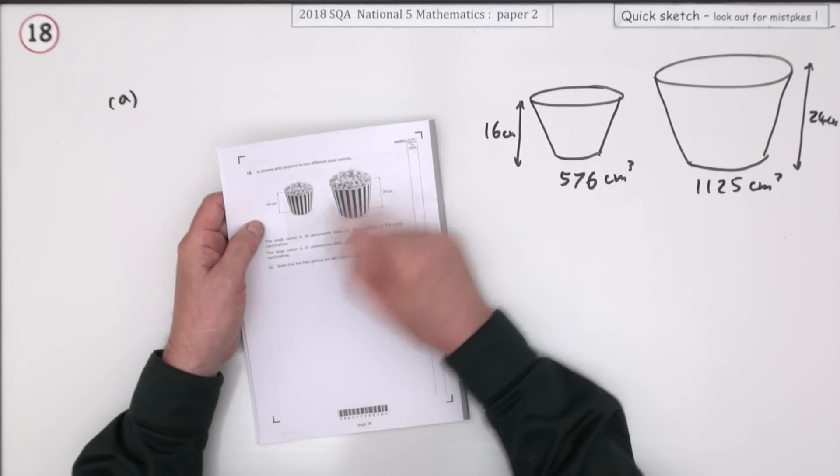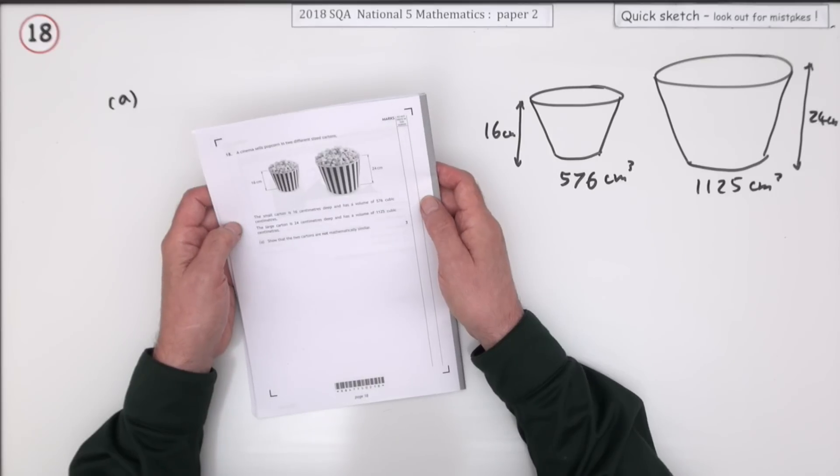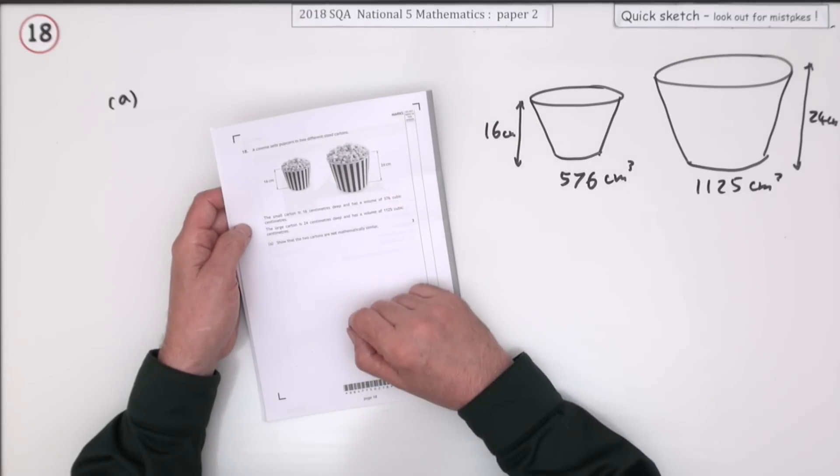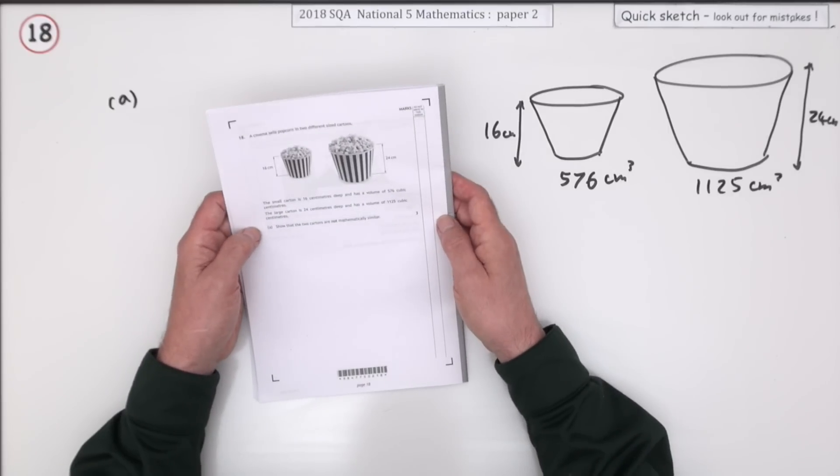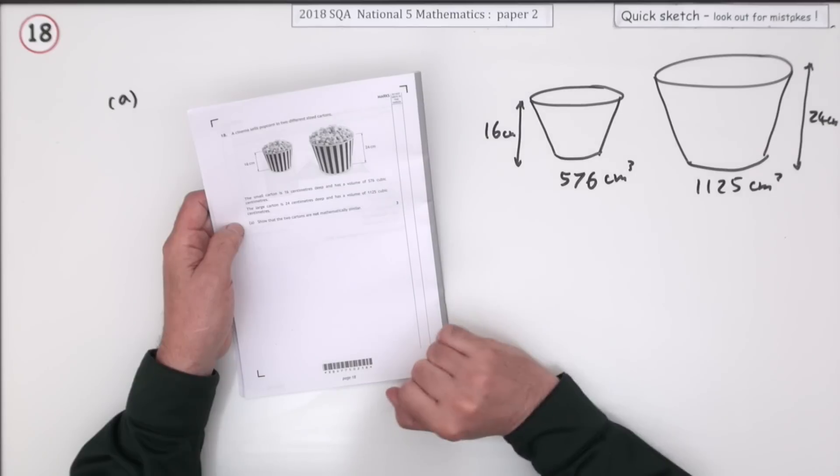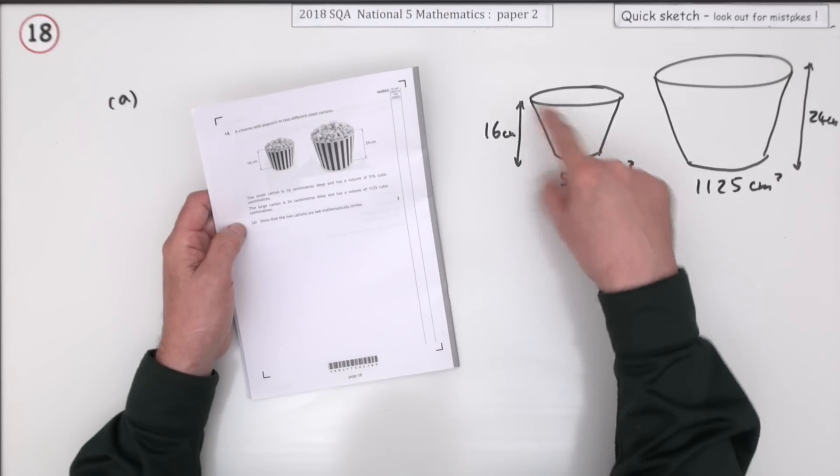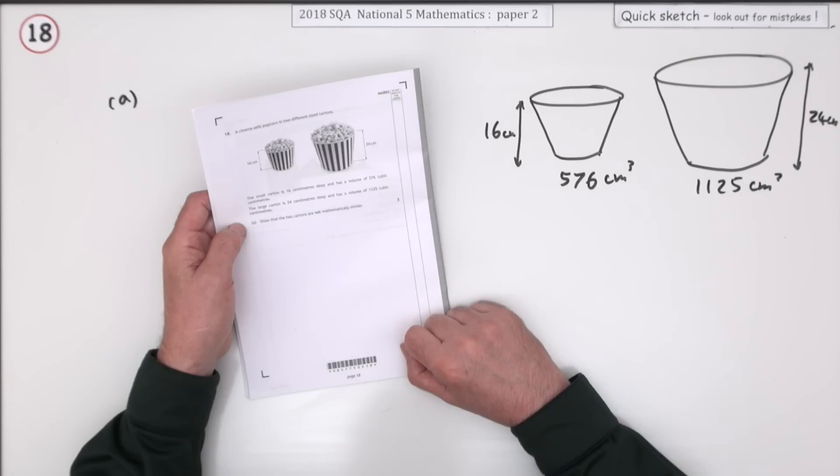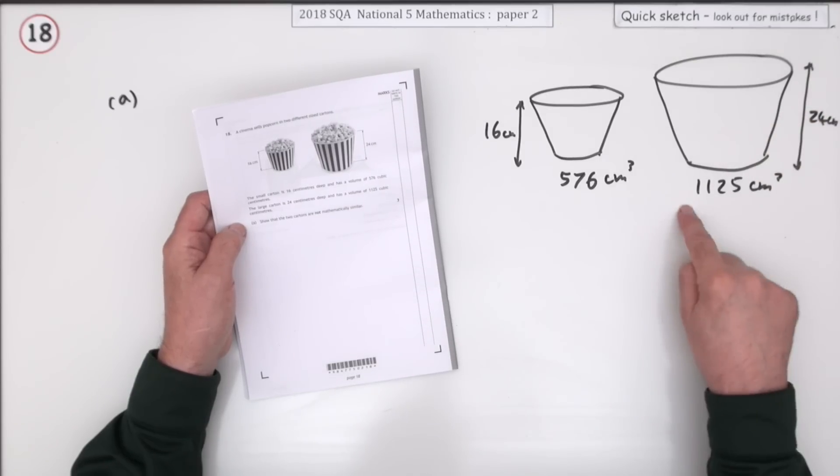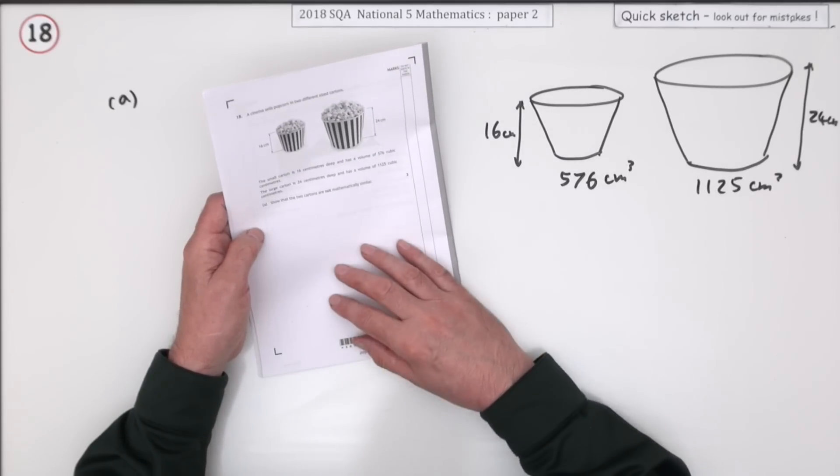Question 18, the last question in paper 2 of the 2018 National 5 exam. Similar shapes, ratios: linear ratios, area ratios, volume ratios. There are two cartons of popcorn. The small carton is 16 centimeters deep with a volume of 576. The large carton is 24 with a volume of 1125. Show that they're not mathematically similar.